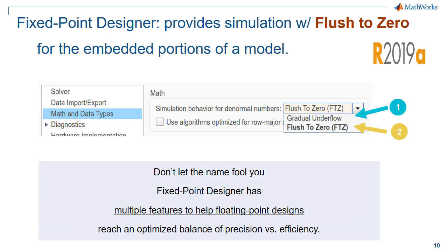In our 2019a release, Fixed Point Designer is providing a new feature that allows you to simulate with flush-to-zero mathematics for the embedded portions of your model, and you can use gradual underflow for the other portions of your system-level model.